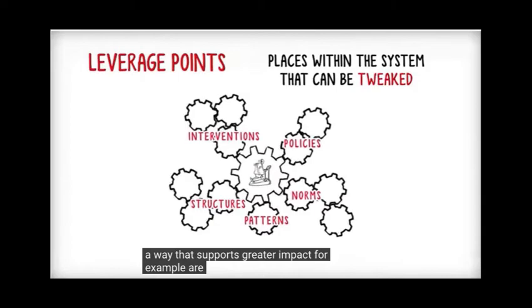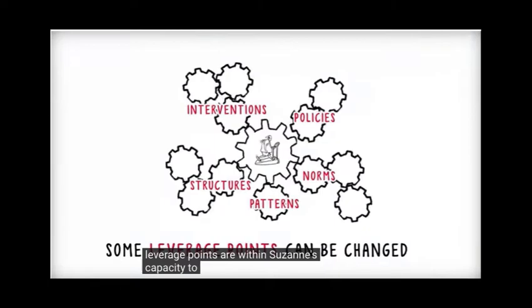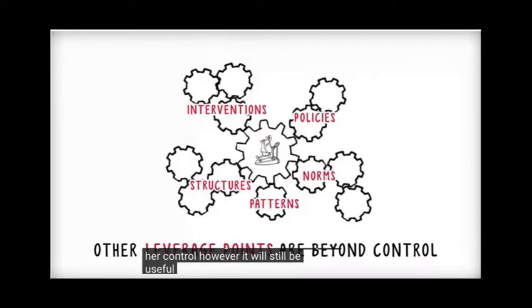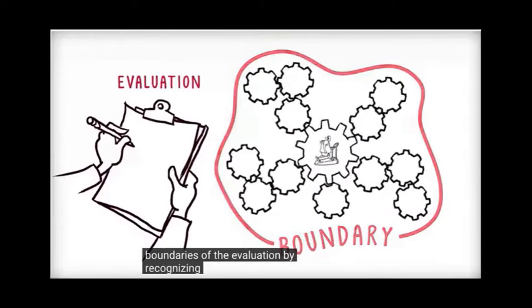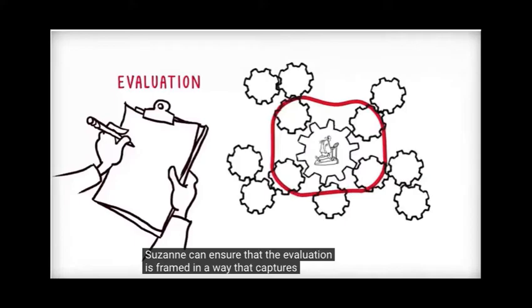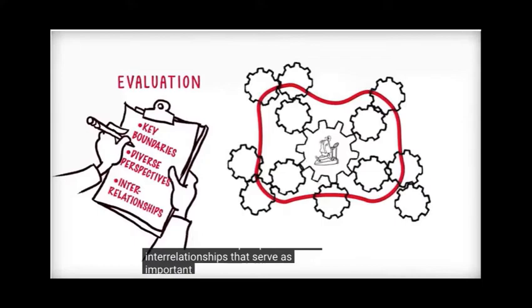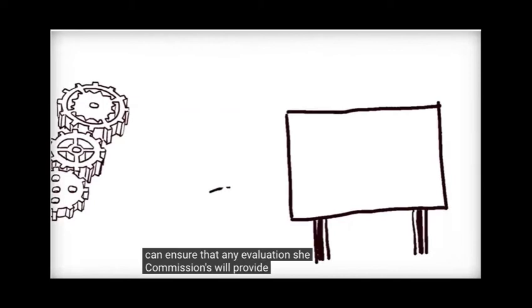For example, are there actions Suzanne and her team might take that could increase the community's access to opportunities for physical activity? While some leverage points are within Suzanne's capacity to change, others will be beyond her control. However, it will still be useful to be aware of these as she plans for the program. Adopting a systems view won't change the boundaries of this program, but it will expand the boundaries of the evaluation. By recognizing the importance of the different perspectives and values of those outside the program and the interrelationships throughout the system, Suzanne can ensure that the evaluation is framed in a way that captures the key boundaries, diverse perspectives, and interrelationships that serve as important leverage points in the system. Of course, Suzanne's budget won't permit an evaluation of the entire system, but she can ensure that any evaluation she commissions will provide her with more strategic direction on how to effectively address obesity within her community.